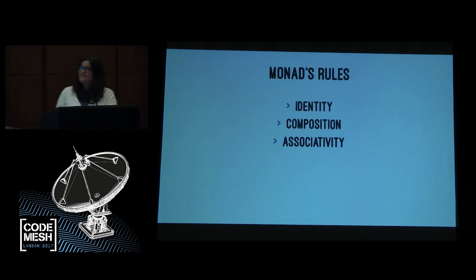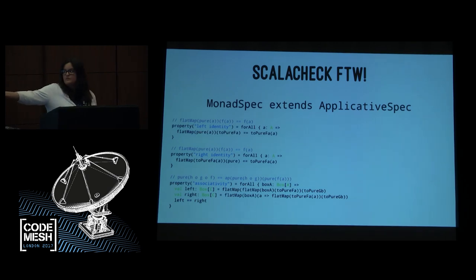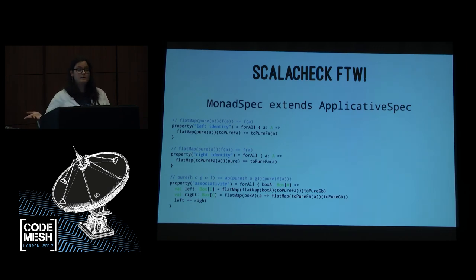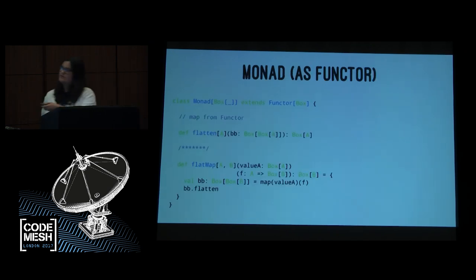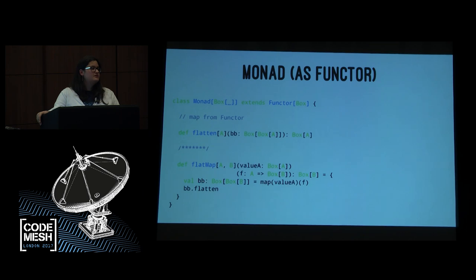You have a set of rules — same as before, because we are still talking about categories — identity, composition, associativity, and we can verify those rules by writing tests. As functional lazy programmers: there's a type class called Monad that has a new function called `flatten`. It tells me how to transform a box of a box of A into a box of A. And because this flattening operation is fairly common, in Scala we have an alias called `flatMap` — it basically means do a map first, and then do a flatten.